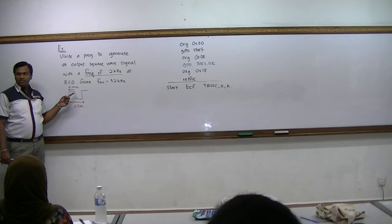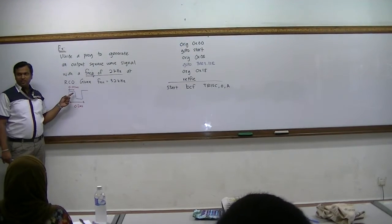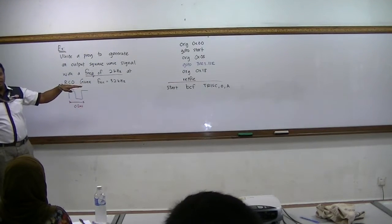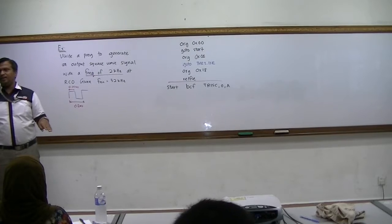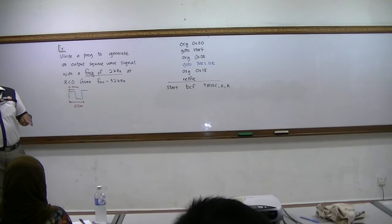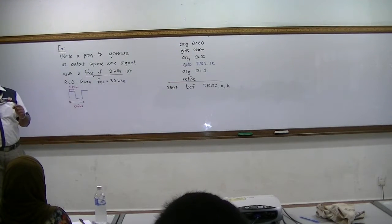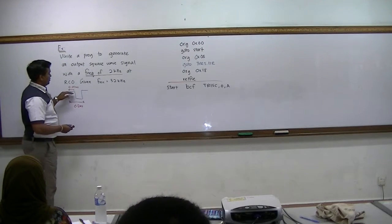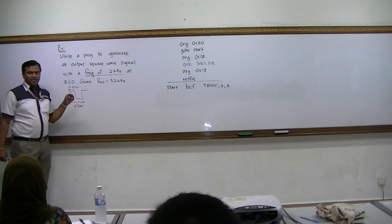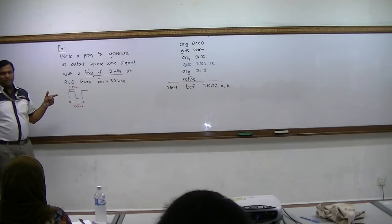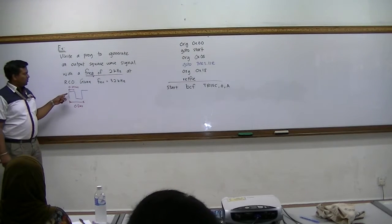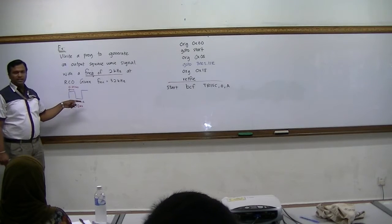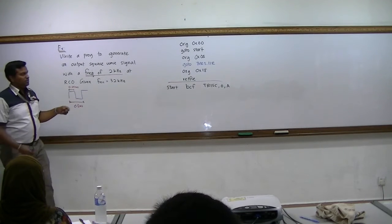We initialize it to 1 first. From the time we initialize it to 1, it will take time, but it is too fast, so don't worry it is negligible. So we want to set it on first and then turn on the timer. The timer will calculate for 0.25 minutes again and then call the interrupt. The interrupt will actually alternate pin C.